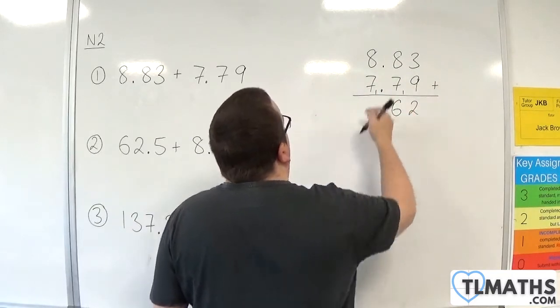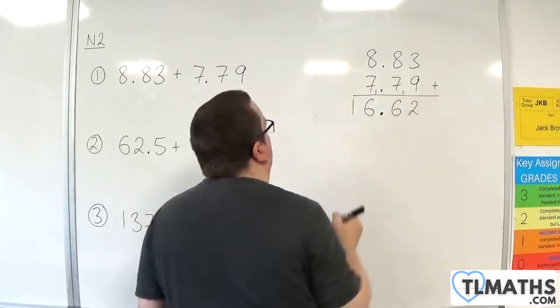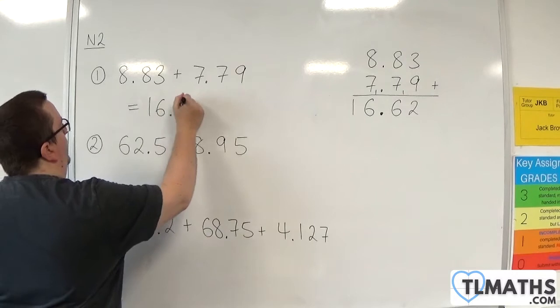Bring the decimal point down. 8 plus 7 is 15, plus the 1 is 16. We have 16.62.